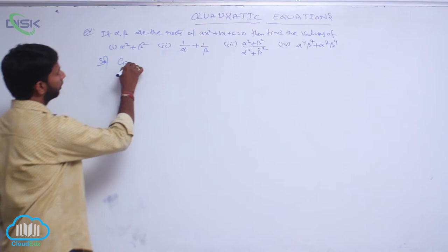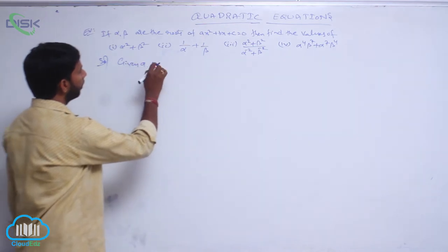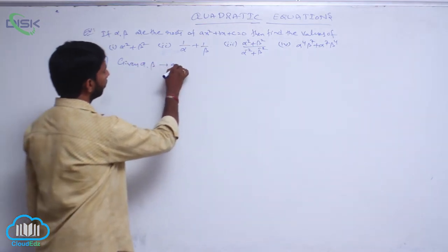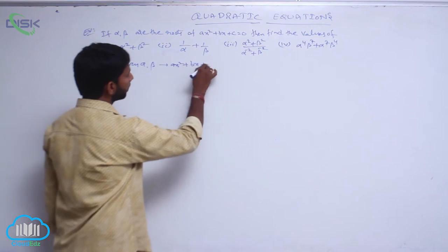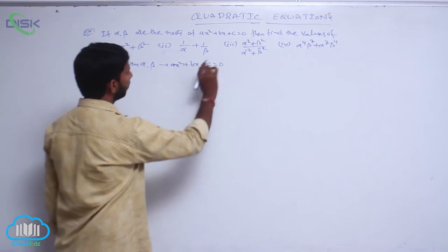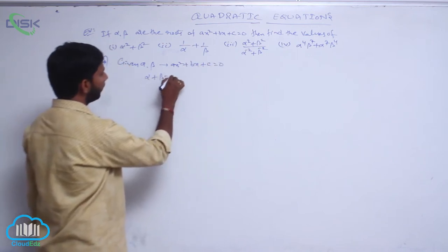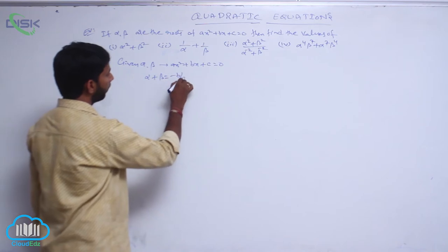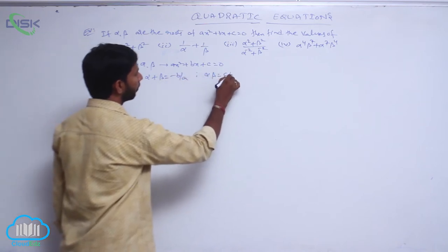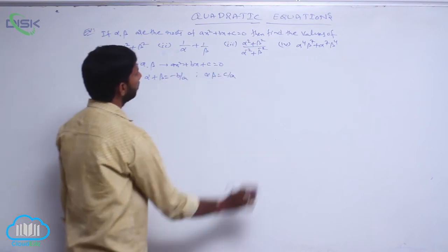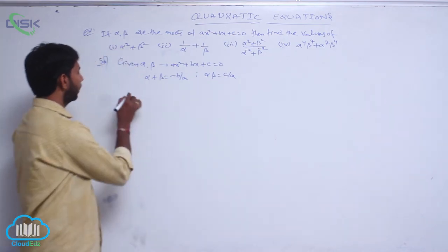Given alpha, beta are the roots of ax squared plus bx plus c equal to 0, then alpha plus beta is equal to minus b by a, and the product of roots alpha beta is equal to c by a.